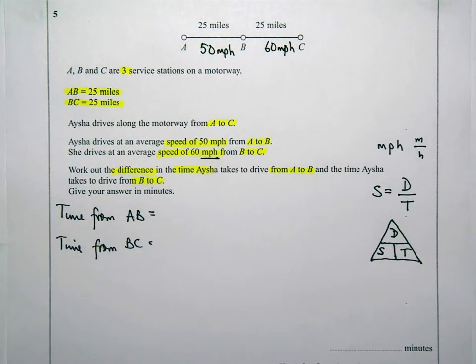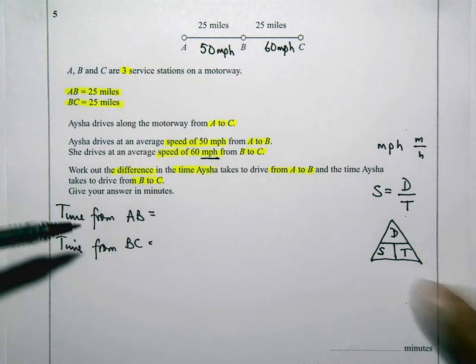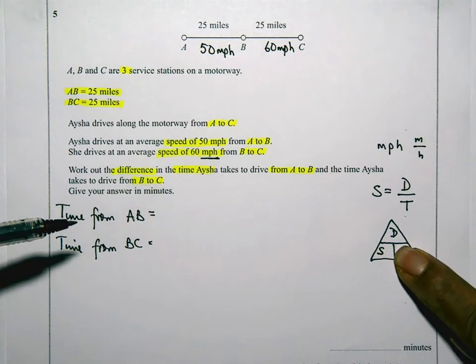Now, because it's time we want to work out, we're going to cover up the T in here. And that means distance divided by speed.